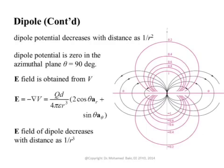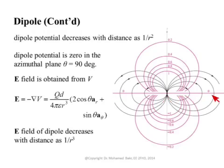As we have seen, the potential decreases as 1 over R squared as you move away from the dipole, and because of the cosine theta dependence, theta equal to 90 degrees gives zero potential. If you plot the constant potential contours, you get values of 1, 0.8, 0.6, 0.4, 0.2, and so on, down to zero.